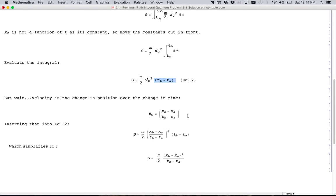That's not the answer yet. You have to do one more thing. The velocity is just the change in position over the change in time. So we can say our x subscript c is the change in position over the change in time where I just choose an arbitrary ending position x sub b and an arbitrary beginning point x sub a and arbitrary ending times and beginning times.